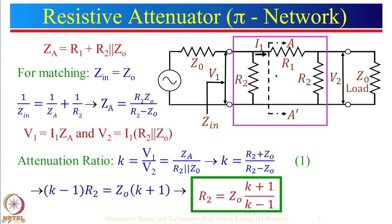Let us find out what Z_input is. Z_input is R2 in parallel with the impedance seen at this node. So 1/Z_input = 1/Z_a + 1/R2, which is the parallel combination of R2 with Z_a. Z_a is the impedance looking at that particular point, which is R1 plus R2 in parallel with Z0. That is the expression for Z_a, and from here we can write Z_a as that particular expression.